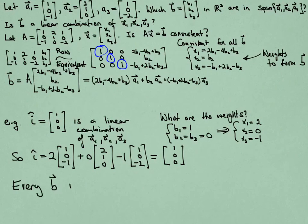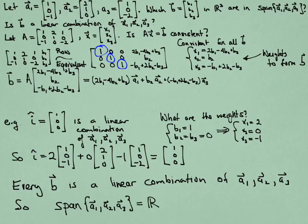So here's our conclusion. Every vector B is a linear combination of A1, A2, and A3. One way to say that very concisely is the span of those three vectors is equal to all of R3. Every vector in R3 can be realized as a linear combination of those three.